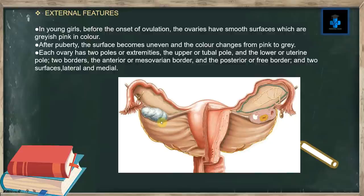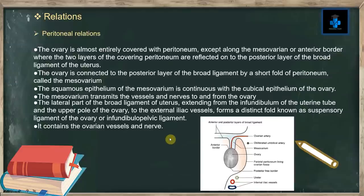There are two borders: the anterior or mesovarian border and the posterior or free border, and two surfaces: lateral and medial. Regarding peritoneal relations, the ovary is almost entirely covered with peritoneum except along the mesovarian or anterior border, where the two layers of the covering peritoneum are reflected on the posterior layer of the broad ligament of the uterus.